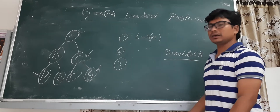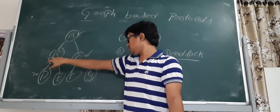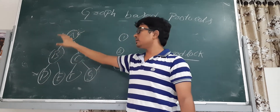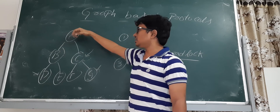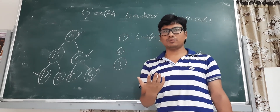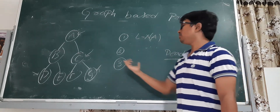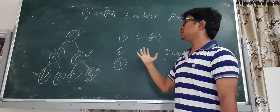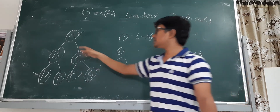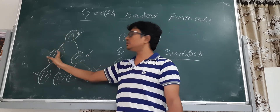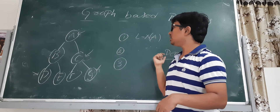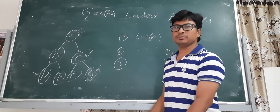The main advantage of the tree-based protocol over 2PL is that it is deadlock-free. It is deadlock-free because an ordering is imposed: the edge goes from A to B only, not from B back to A, so there are no cycles. As you know from operating systems, one cause of deadlock is circular wait. Since there is no circular wait in a tree structure — only A to B, not B to A — this protocol is deadlock-free. In the next video I will discuss examples related to the graph-based protocol.